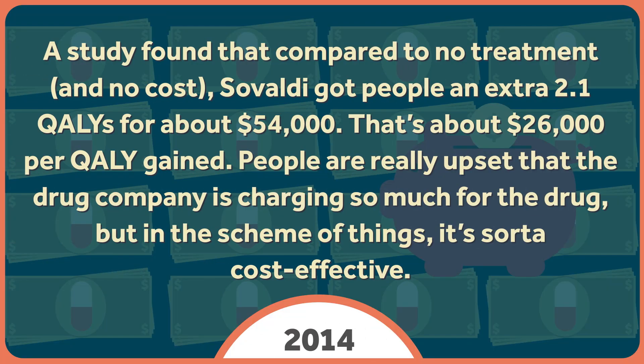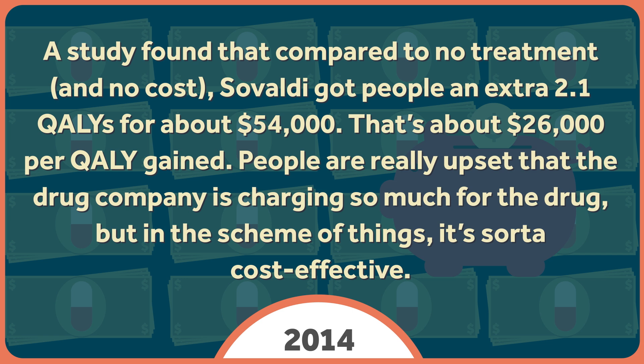Even though $100,000 seems like an exorbitant amount of money for a treatment to cure moderate seizure disorder, getting that many years of perfect health is a huge gain. Such a cure doesn't exist, but there are similar real-world examples. Sovaldi, a drug for patients infected with hepatitis C, is being sold for about $84,000 for a full treatment. A study last year found that compared to no treatment, Sovaldi got people an extra 2.1 QALYs for about $54,000 — that's about $26,000 per QALY gained. People are really upset about the price, but in the scheme of things, it's sort of cost-effective.